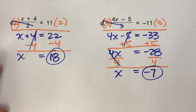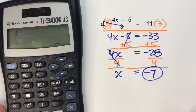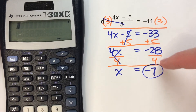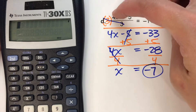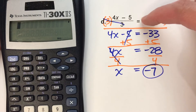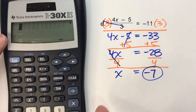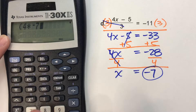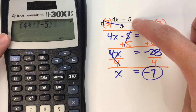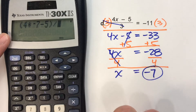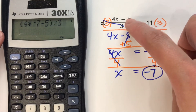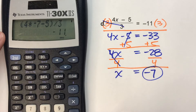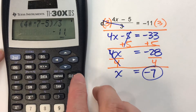Just like before, we can check our answer — although this was a little more complicated to put in the calculator, so we need to be careful. If we put negative 7 in, this should equal negative 11. We do parentheses for the top: 4 times negative 7 minus 5, and all that in parentheses divided by 3. Hopefully, if we're correct, this should equal negative 11. Does it? Yes, it does. So we know we're correct.